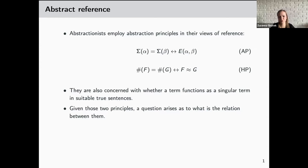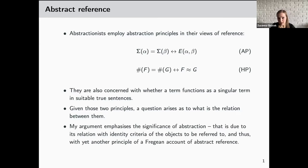Is the one that concerns singular terms in true sentences the fundamental one, and the abstraction principle just one way of satisfying it? Or is it the other way around — that even if there is a suitable true sentence involving the term in question, we furthermore need an abstraction principle to ensure the term refers? My argument will support the latter, emphasizing the significance of abstraction due to its relation with identity criteria of the objects to be referred to — and thus with yet another principle: the one that has to do with identity conditions of the object to be referred to.